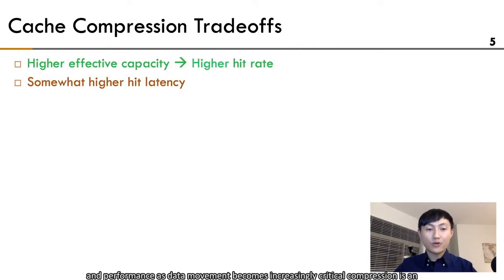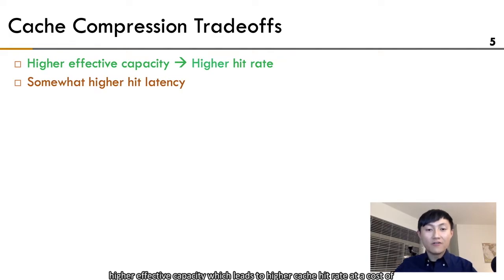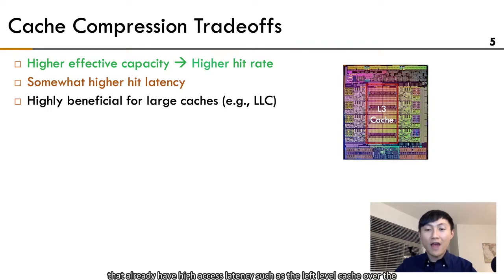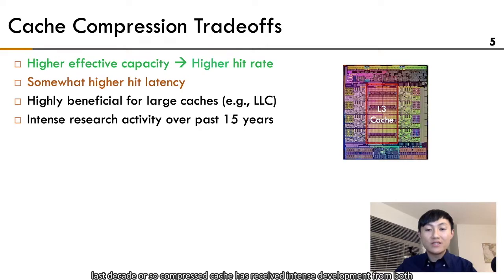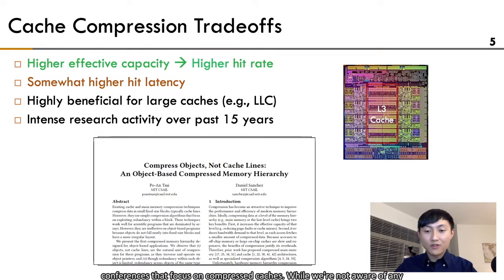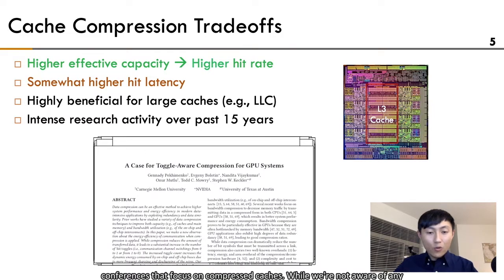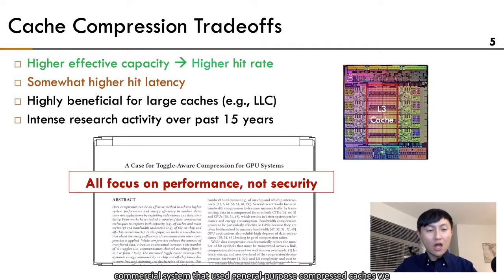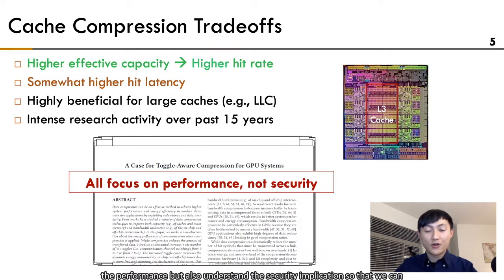As data movement becomes increasingly critical, compression is an attractive technique to improve memory performance. Compressed cache provides higher effective capacity, which leads to higher cache hit rate, at a cost of somewhat higher hit latency. It is particularly beneficial for large caches that already have high access latency, such as the last-level cache. Over the last decade or so, compressed cache has received intense development from both academia and industry. We believe right now is the perfect timing to not only improve performance but also understand the security implications, so that we can prevent another potential security crisis like Spectre.